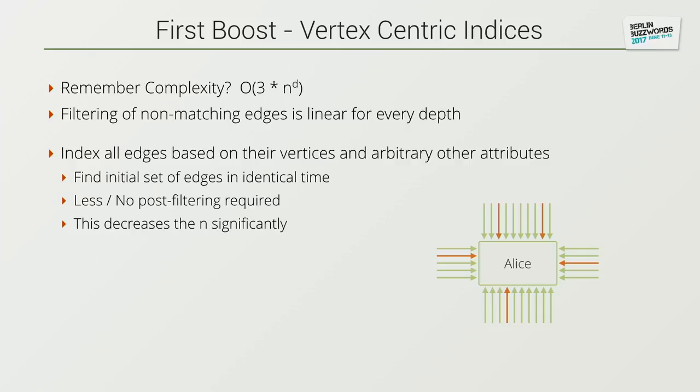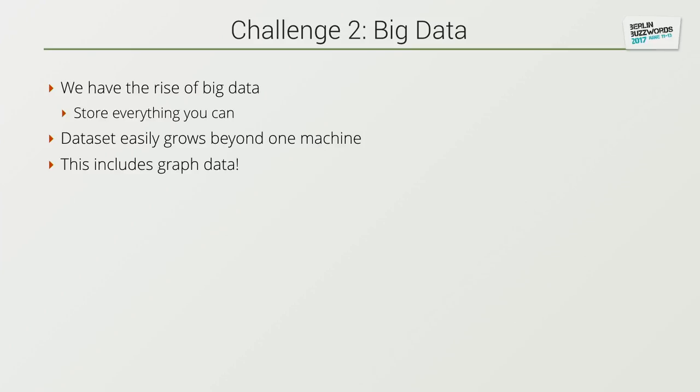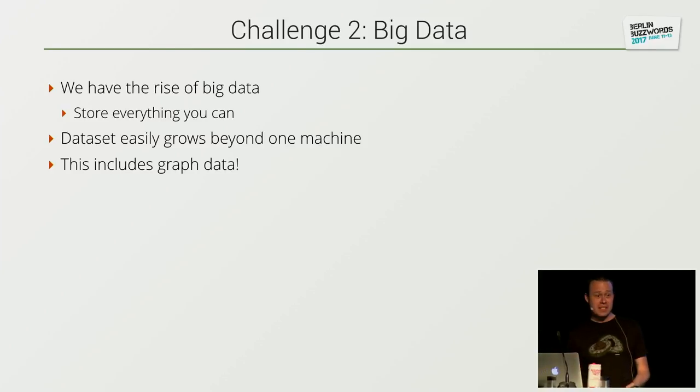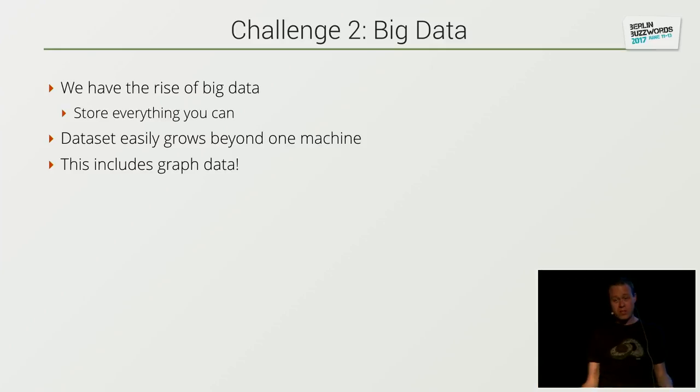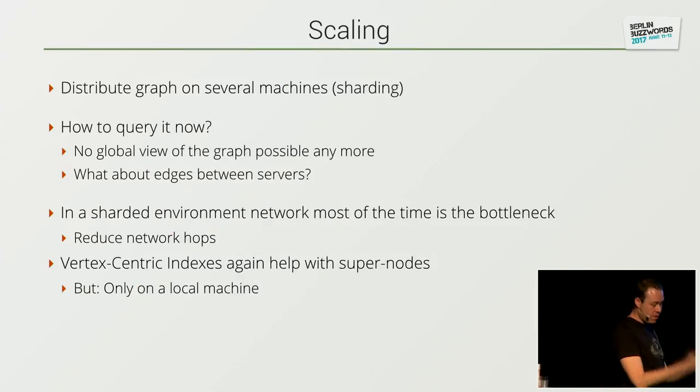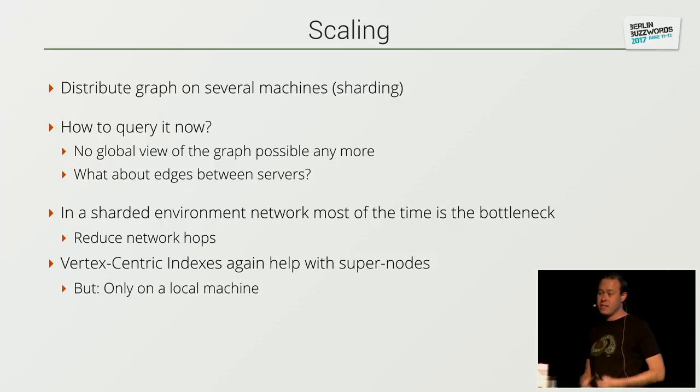Now let's talk about challenge two, which is way more challenging: big data. Everyone is storing as much data as they can. Data sets are growing beyond a single machine, and this also includes graph data — graph data can be greater than one machine. You need a system that allows querying data larger than a single machine, and therefore you need scaling — a scale-out approach. We can take the same approach as all other databases: distribute the graph on several machines. This technique is called sharding. We just chop the graph into several parts and put it on all the machines in our cluster.